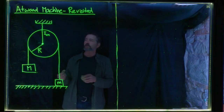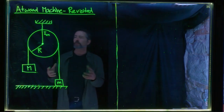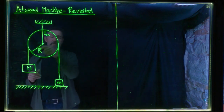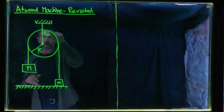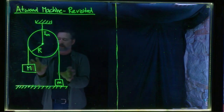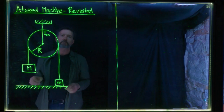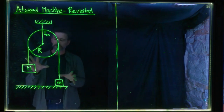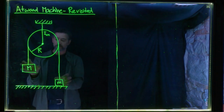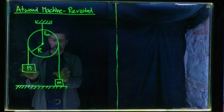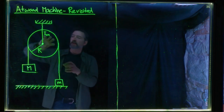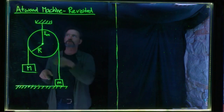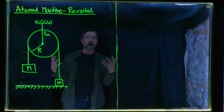We're going to revisit this example of a massive pulley with moment of inertia ICM and radius R that has a rope over the top connected to two blocks of masses big M and little m. If you release these masses from rest and big M is bigger than little m, then big M will accelerate downwards, little m will accelerate upwards, and the pulley will undergo angular acceleration, spinning faster and faster. This is called the Atwood machine.